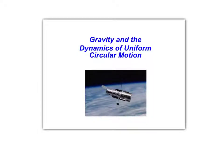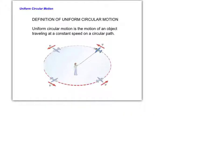The purpose of this video is to introduce uniform circular motion and the dynamics, or the forces involved, with uniform circular motion. Uniform circular motion is a state where an object travels in a circular path at a constant speed.